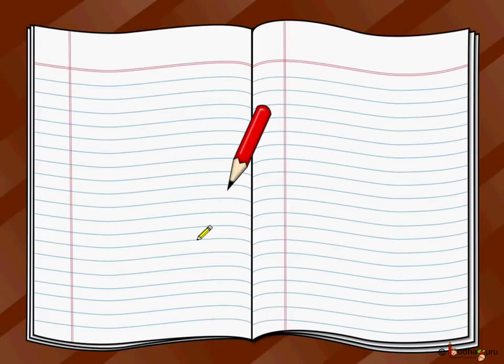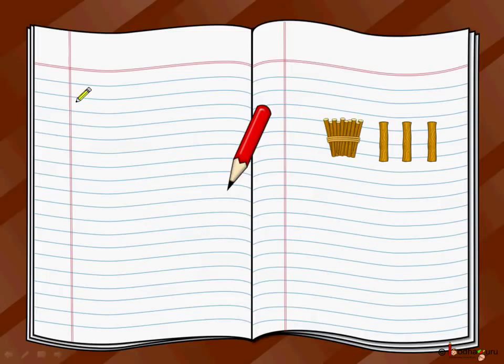Let's start from our blank notebook and write two-digit numbers. Let's say we have 13 sticks: a bundle of 10 and 1, 2, 3 — that is 10 plus 3 — which is 13 sticks.